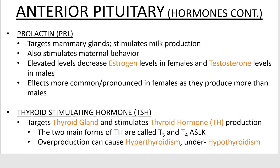The last two anterior pituitary hormones are prolactin and thyroid stimulating hormone. Prolactin targets the mammary glands, stimulating females to produce milk. It also stimulates maternal behavior and causes a decrease in sex hormones — estrogen in females and testosterone in males. Thyroid stimulating hormone, or TSH, stimulates the thyroid gland — don't confuse TSH with thyroid hormone (TH), which is made by the thyroid itself.